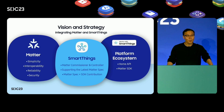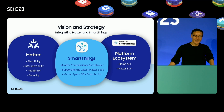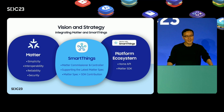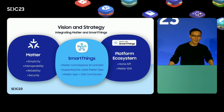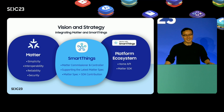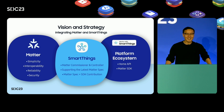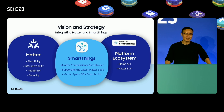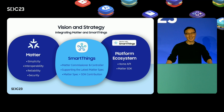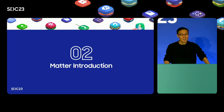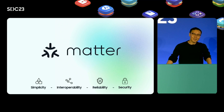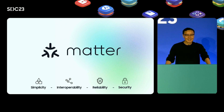Vision and strategy: one year after launch, Matter is getting very popular in smart home. Over 300 companies from all over the world are working together. SmartThings is one of the companies proactively integrating Matter into their own platform, with Matter commissioner and control functionality in many devices. We are announcing new tools to make it easy to create smart home devices and apps and connect them with SmartThings.